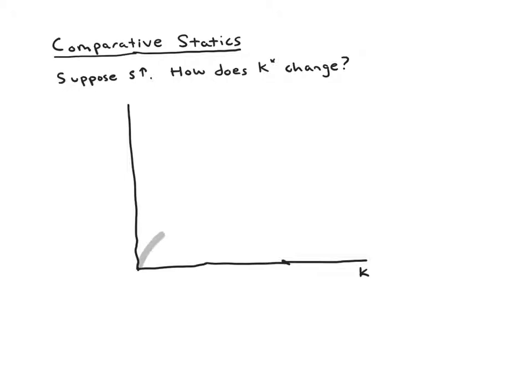We'll start by drawing in our investment s₁·f(k) curve, then we'll draw in our depreciation curve δk. So we get our initial steady state, k*₁.